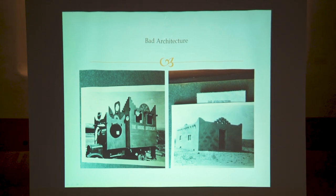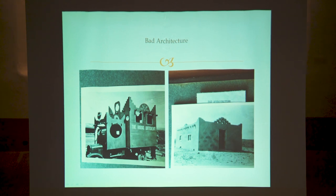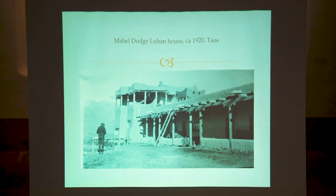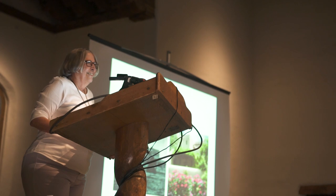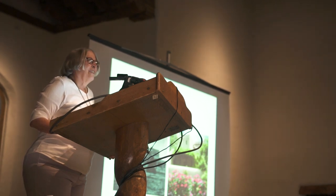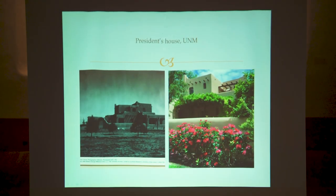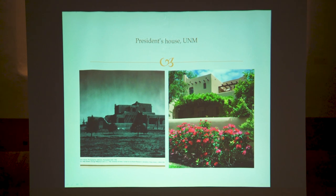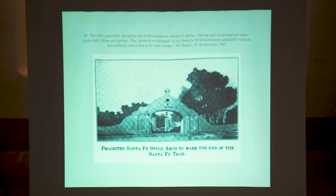Included in the bad architecture, I want you to know, is the Mabel Dodge Lujan House in Taos. So if it's not in Santa Fe, you know. By the 30s, it was nailed down — everybody at the university accepted Santa Fe style architecture, everybody in Santa Fe accepted it. It was another decade or two before it became written into law. But here you see the president's house when it was first built, and here you see it today — Dave and I stopped by there and took this picture on the day we went to look at the albums at the university.